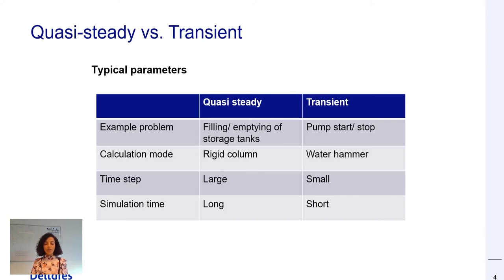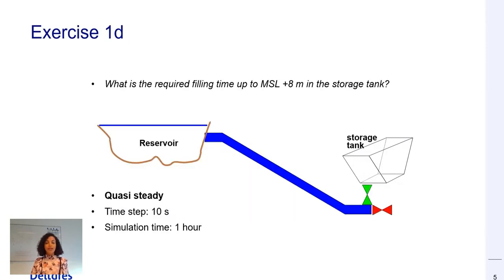To elaborate on this, we will look at an example. Let's start by solving a quasi-steady problem, and as always we start by problem definition and what is the question we are trying to answer. Let's assume we're having the same gravity system as before and we are trying to calculate the time required for filling the storage tank up to 80 meters mean sea level.